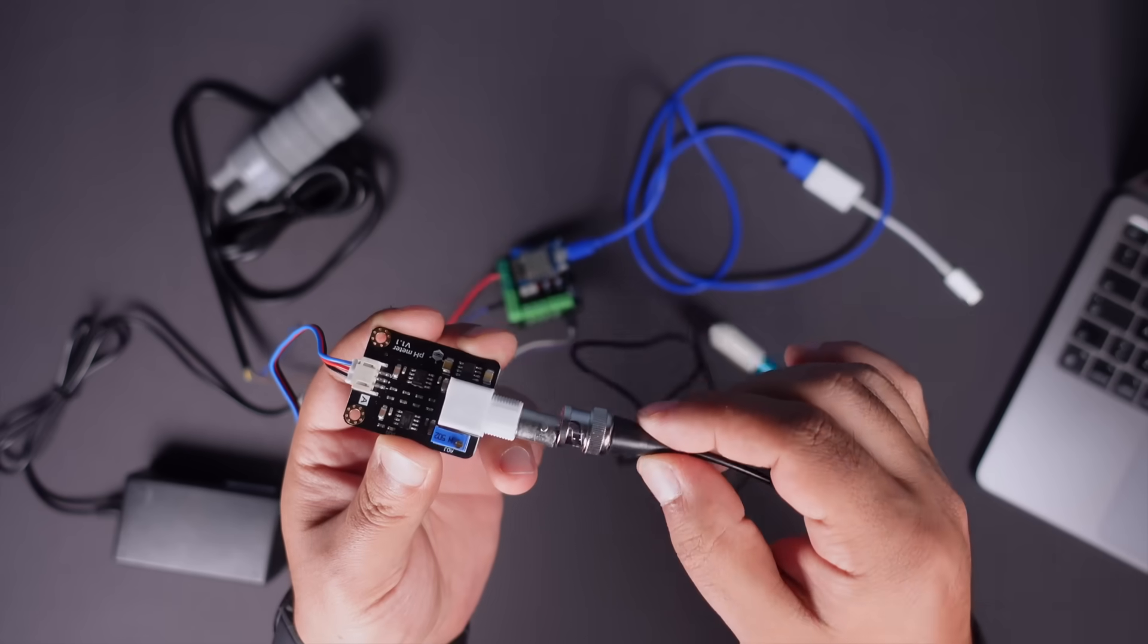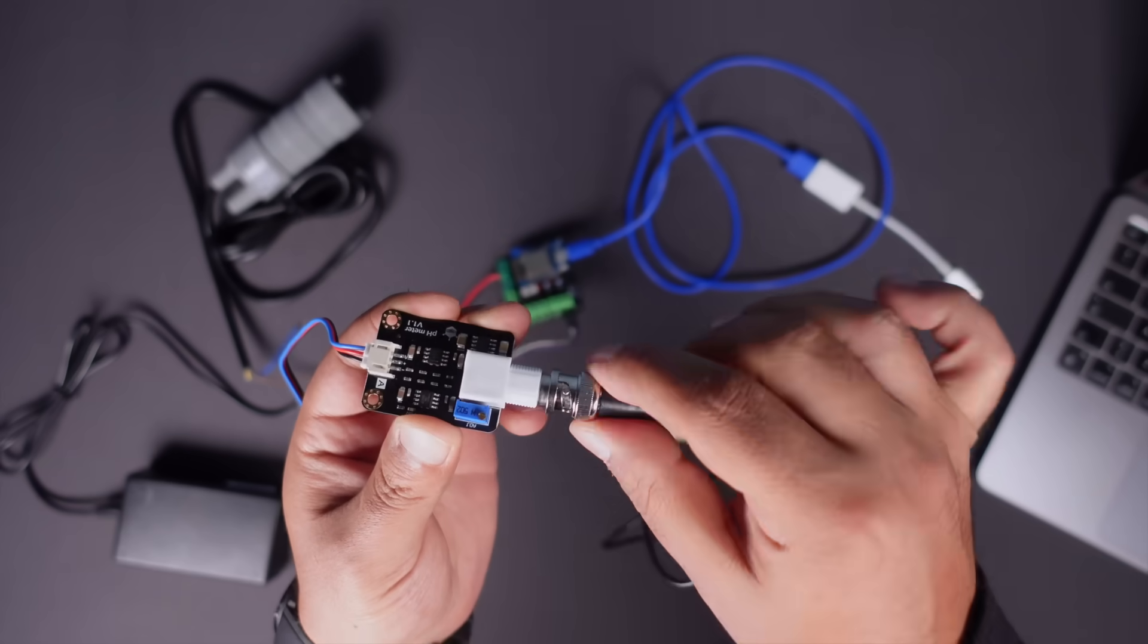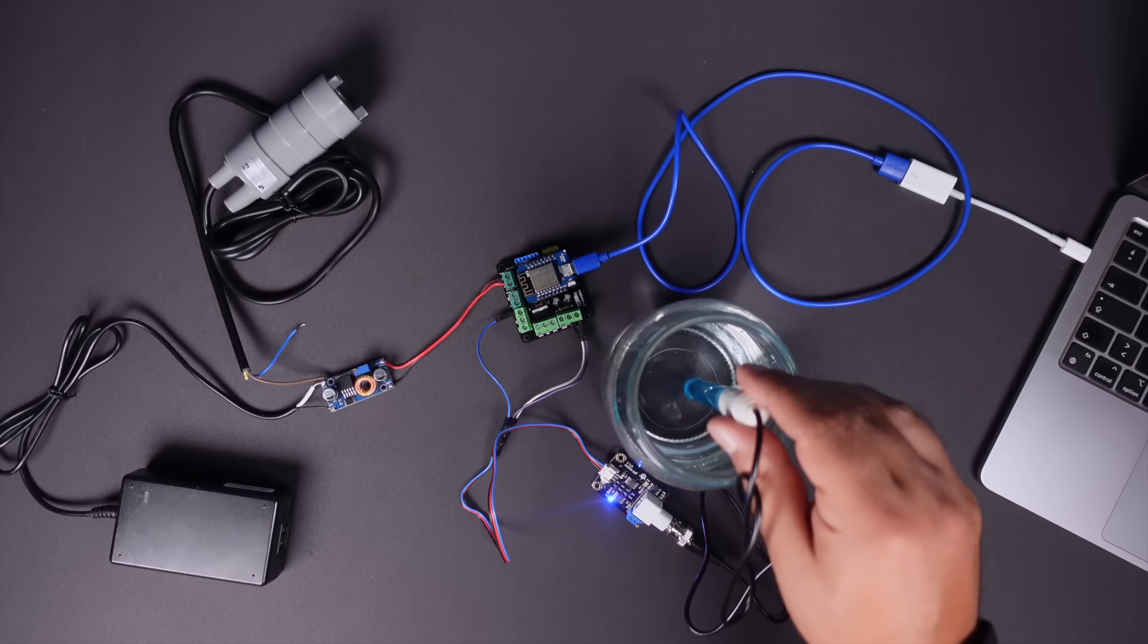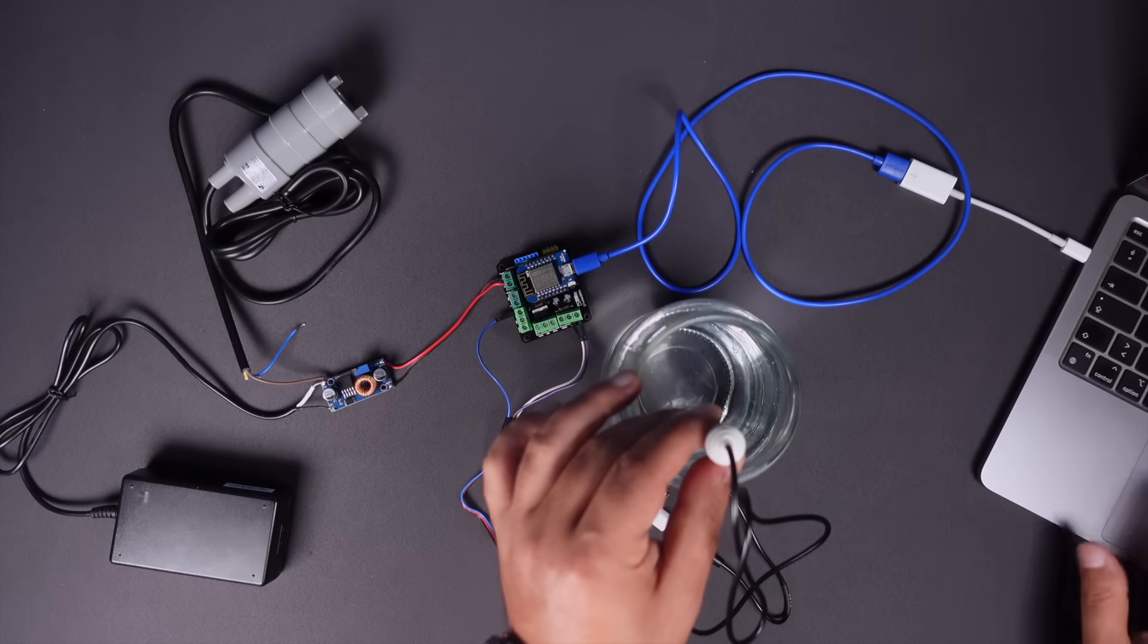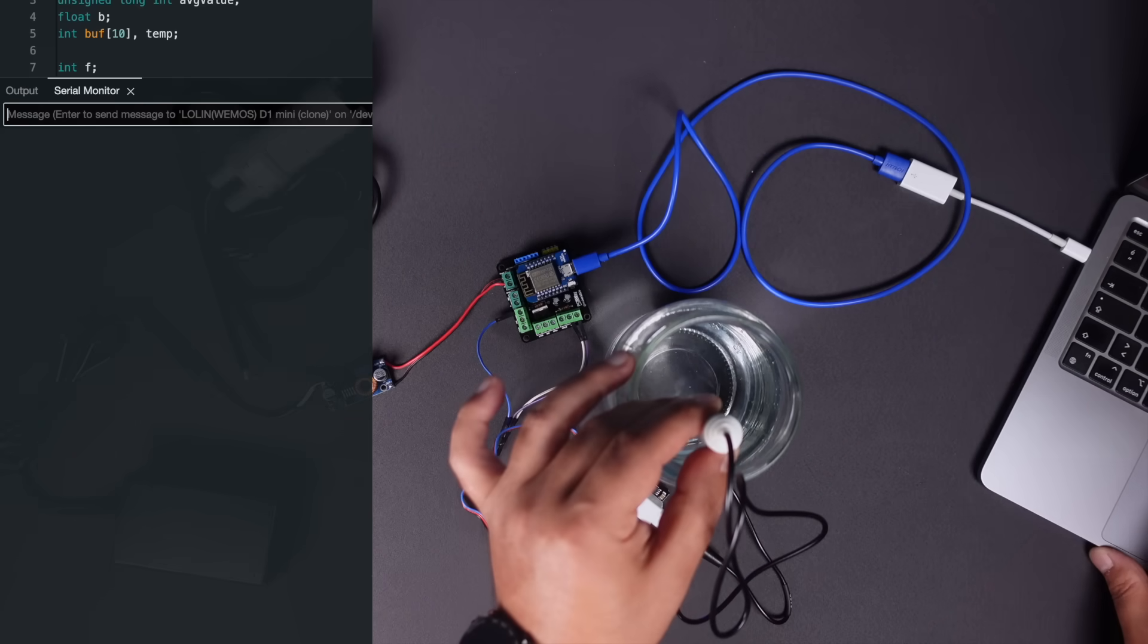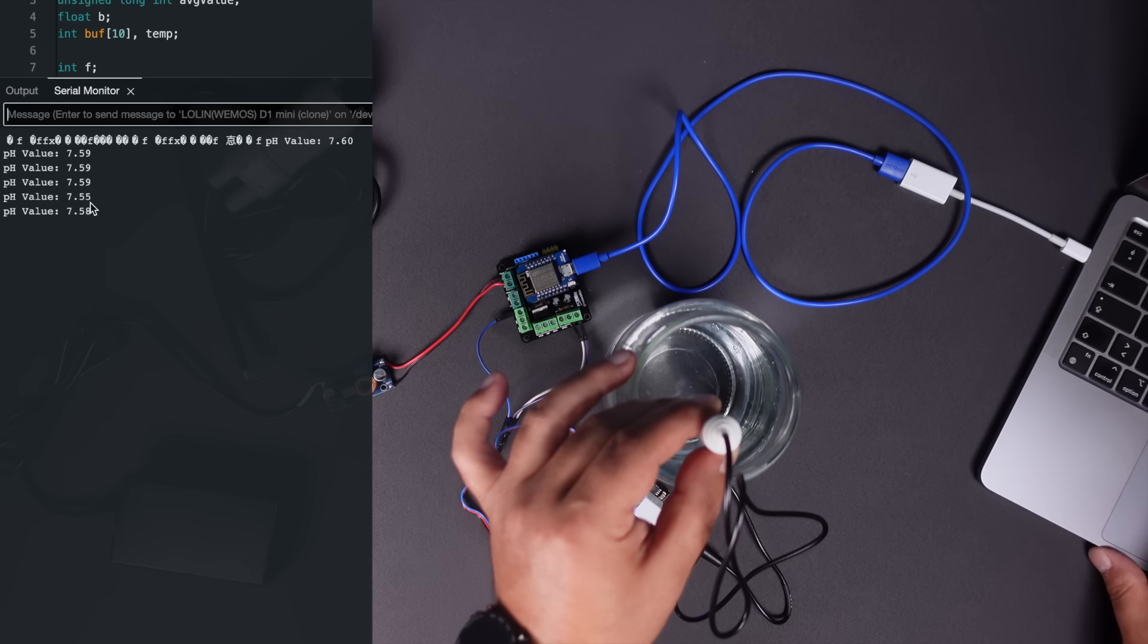The pH of water can vary depending on several factors, including the weather, but tap water typically has a pH of about 7.5. We will touch on the pH value required for a hydroponic system later. As you can see, the code in the circuit works successfully.